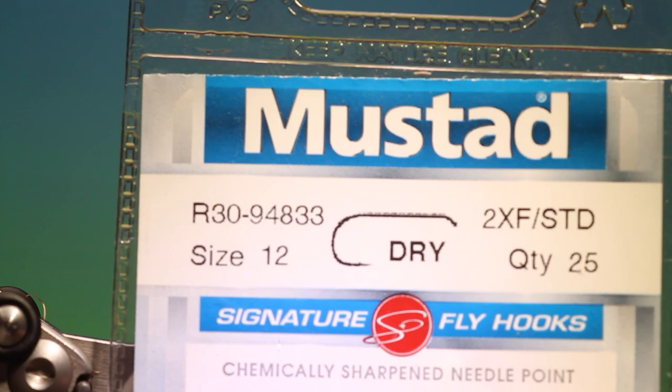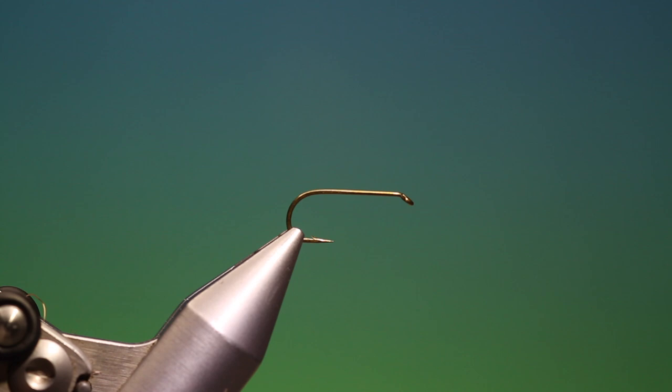We'll start with the Mustard R30 size 12 dry fly hook. This is my deer hair mayfly dun.